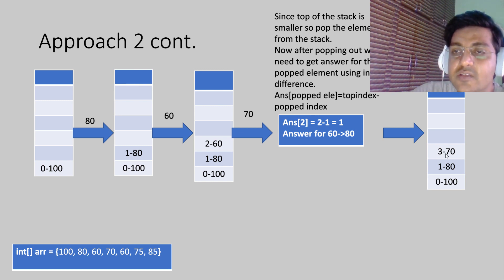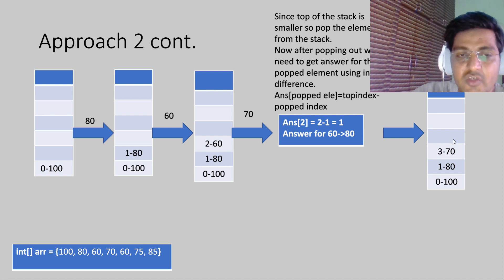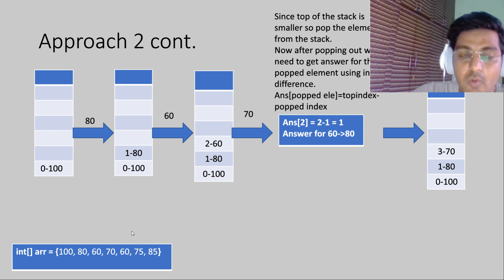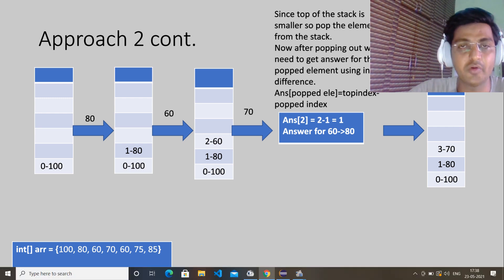Similarly, we proceed to 75. We see that 75 is greater than 60 and 70, so we pop those elements out and apply the same formula for each. This continues for all elements in the array. Let's jump to the coding part to see this in action.